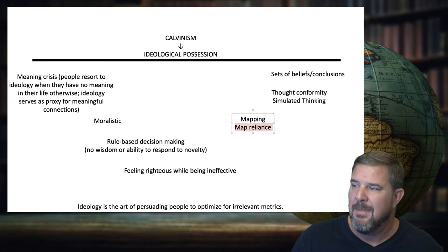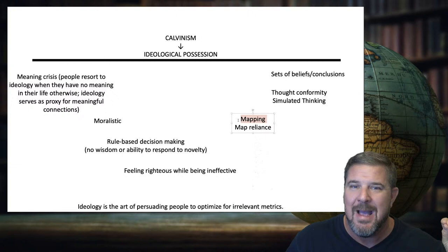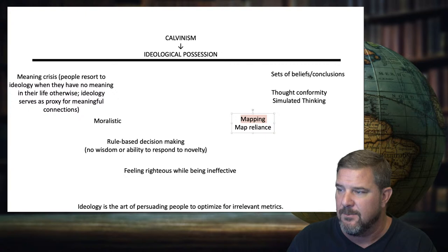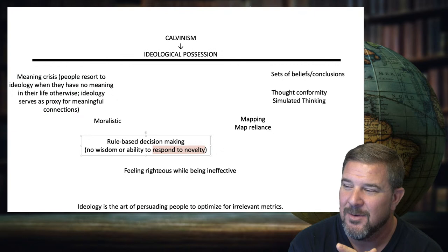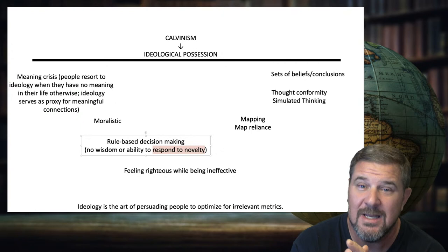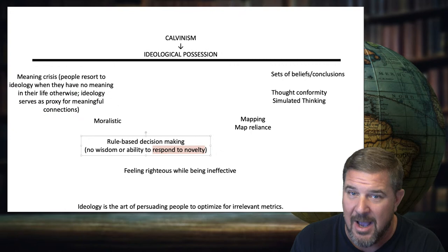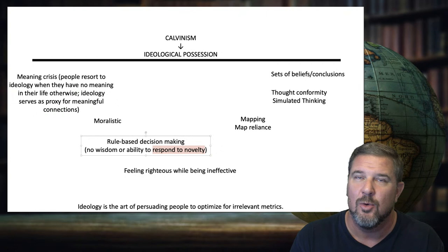Map reliance: when you encounter an ideologue, they just map you back to some other evil thing they know — like mapping you back to Arminianism. They can't deal with novelty. When I was talking to Sonny Hernandez, I brought up Ephesians 2:12 and he had never encountered it before. He didn't know how to respond to novelty. He had a formula he was following, and that wasn't part of it.